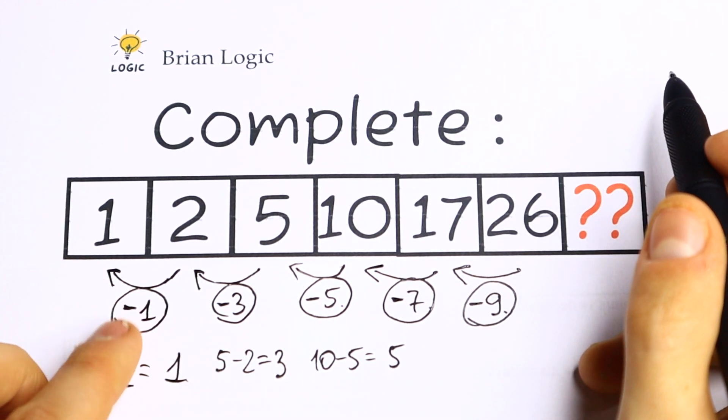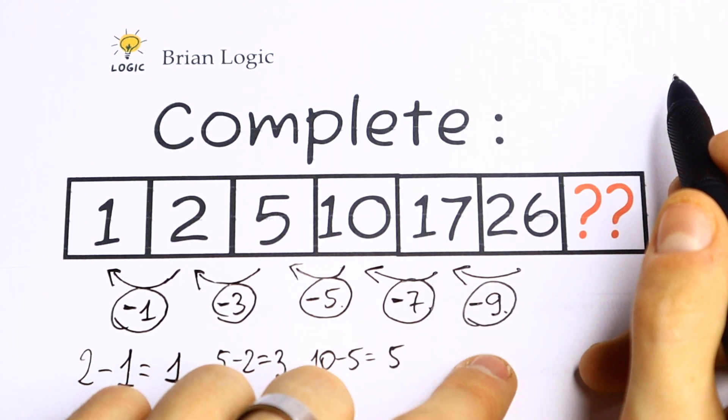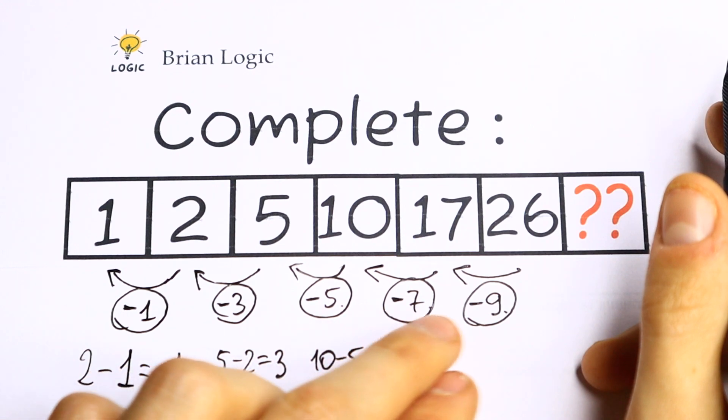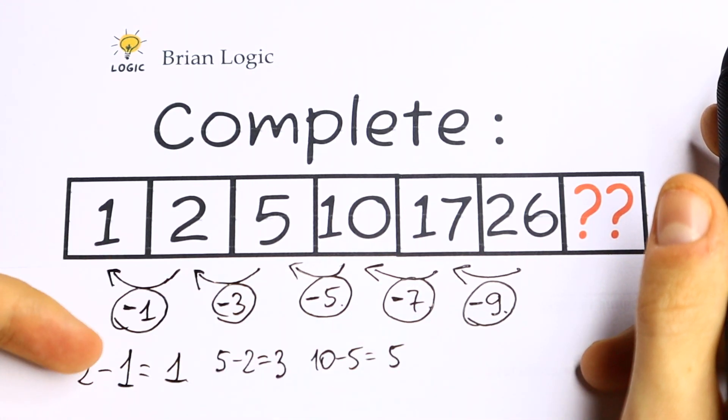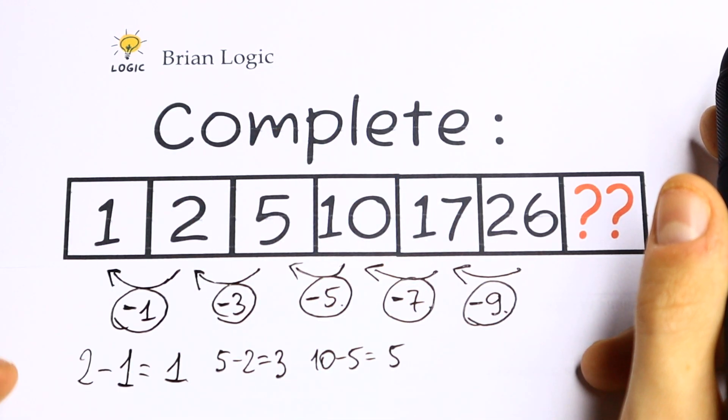So what we can see right now. We need to subtract 1, 3, 5, 7, and 9. It's not hard to see that these are all odd numbers. So we have 1, 3, 5, 7, 9. It's a natural order.